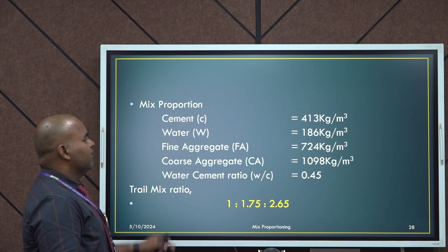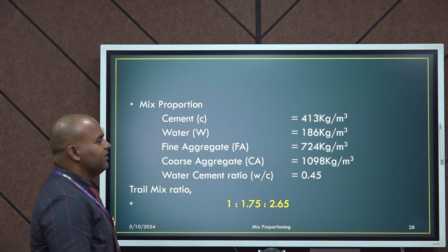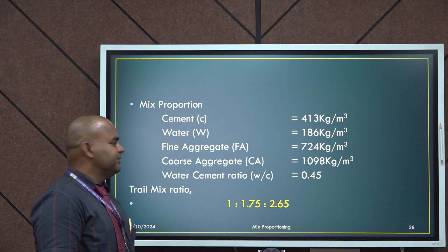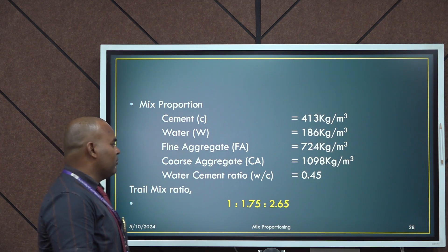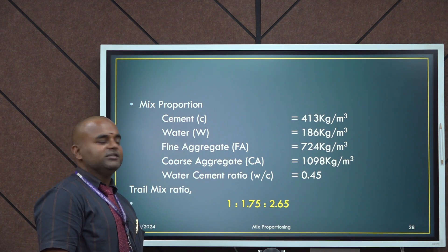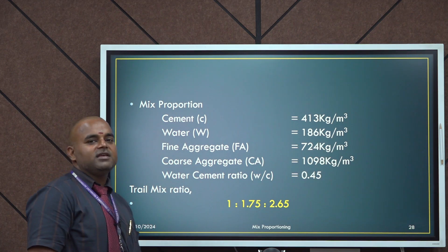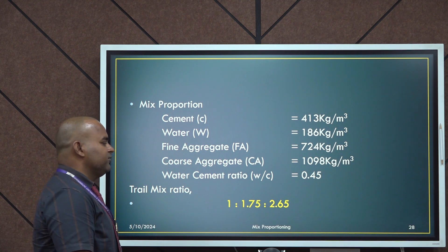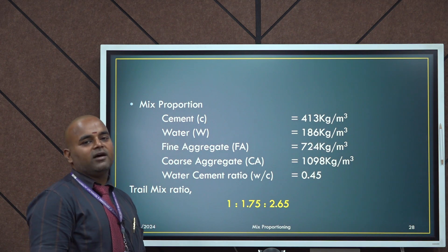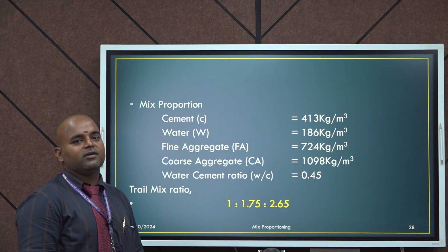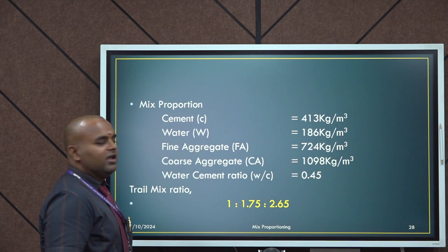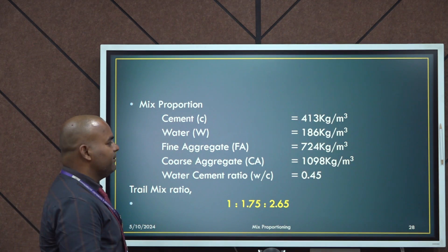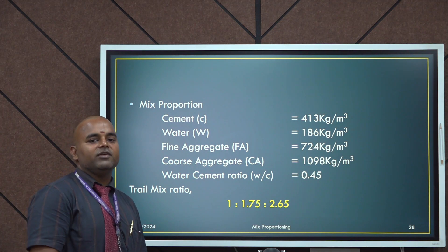Final mix proportion per metre cube: Cement = 413 kg/m³, Water = 186 kg/m³, Fine aggregate = 724 kg/m³, Coarse aggregate = 1098 kg/m³, Water cement ratio = 0.45, and the trial mix ratio is 1:1.75:2.65. If this ratio is acceptable for the required fresh and hardened concrete properties, then it is finalized. If not, since design mix is a trial and error method, we can alter some properties such as the water cement ratio and repeat the trial. Thank you.